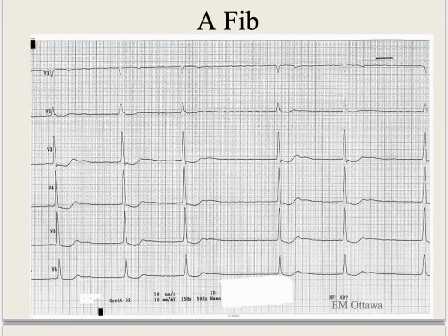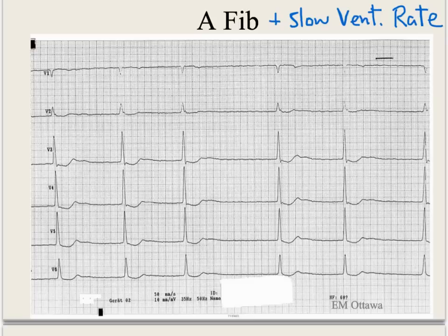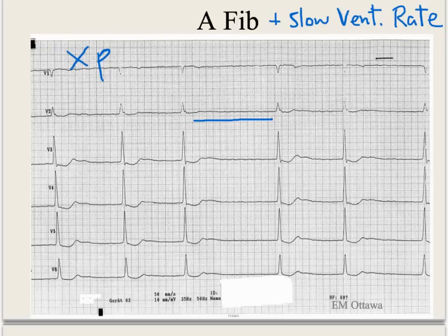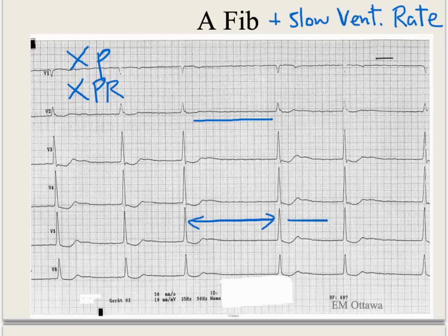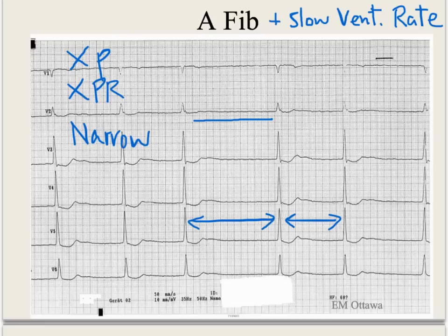This is atrial fibrillation with a slow ventricular response. You don't see P waves; however, you do see a bit of wavering at the baseline — that is caused from the depolarization of the atrial myocytes. So no P wave equals no PR interval and no relationship between P and QRS complexes. The RR intervals are not the same as each other, and the QRS complexes are narrow. Each QRS complex occurs when the impulse from the atrium gets transmitted through the AV node intermittently.